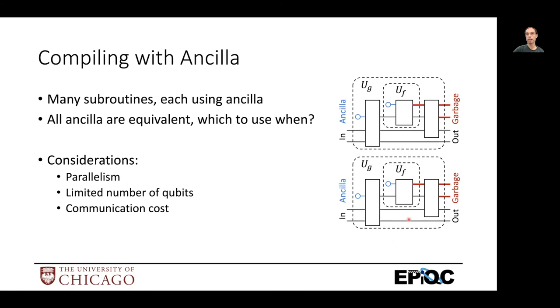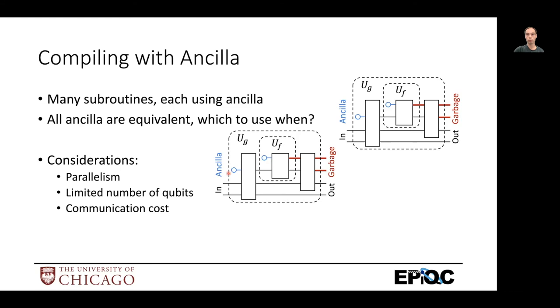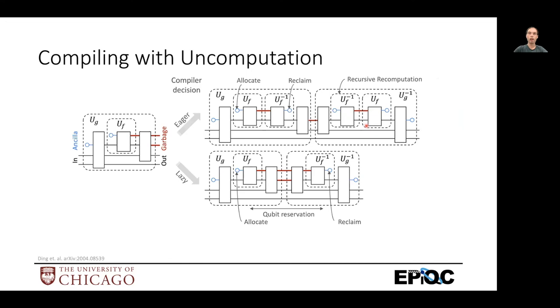So on the right here, we've got two sub pieces of some algorithm. They each need Ancilla. If you have plenty of Ancilla, you can give them all four of these groups of Ancilla and let them run in parallel. If you don't have enough Ancilla, then you have to run them in series where this one gets to run with two groups of Ancilla, then uncomputes them. And then later this one runs and uses these two on the same Ancilla that this one just released.